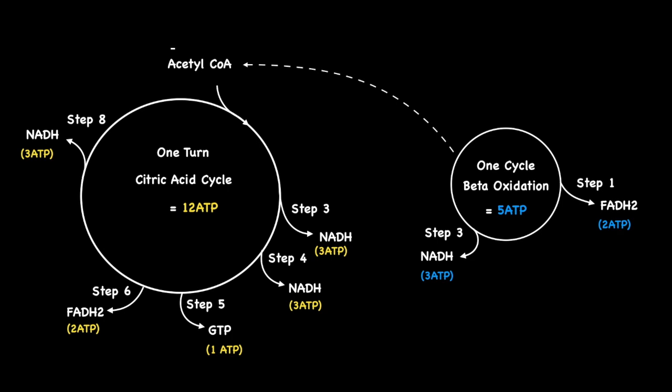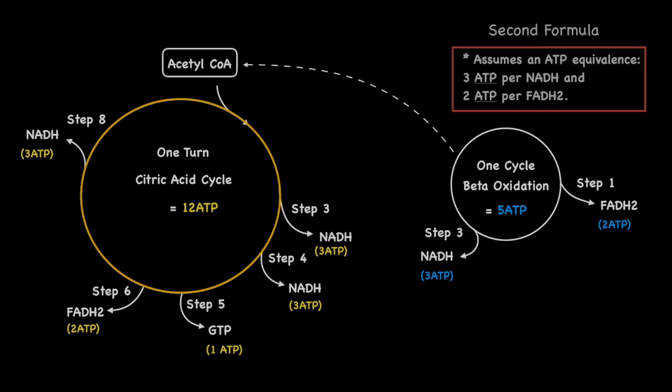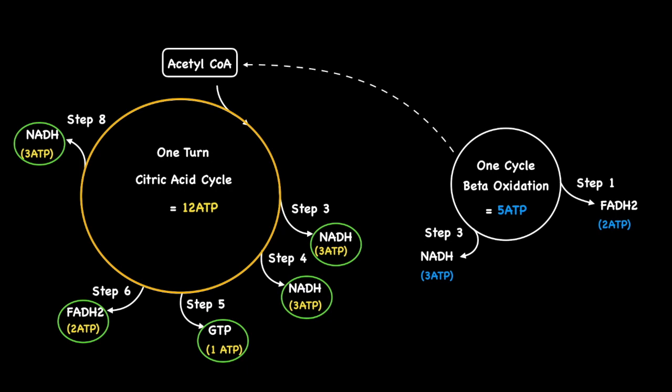Recall how for every acetyl-CoA produced during beta-oxidation that enters into the citric acid cycle causes the cycle to spin once. One turn of the citric acid cycle produces one NADH at step number 3, one NADH at step number 4, one GTP at step 5, one FADH2 at step number 6, and one NADH at step number 8. Adding the ATP equivalents for each of these molecules gives a total of 12 ATP per cycle. Or put another way, each acetyl-CoA is equal to 12 ATP.